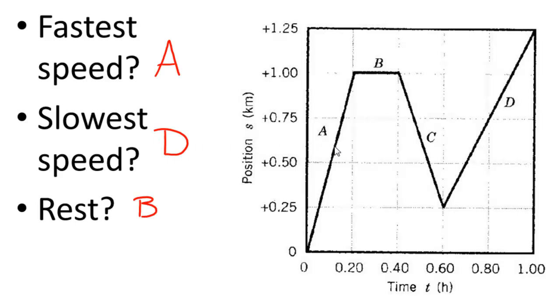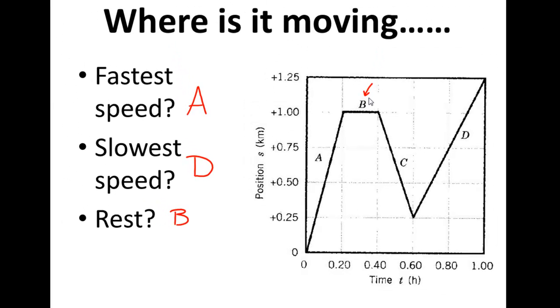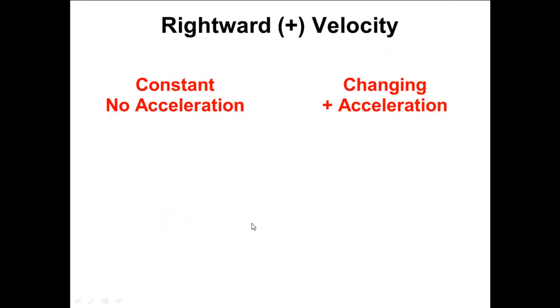So fastest moving on a PT graph is going to be your steep slope. Slowest is going to be the more gentle slope. And if you're actually going to say, well, I understand this object right here is at rest, then you're right too. I understand what you're saying. You're definitely cool.